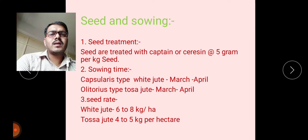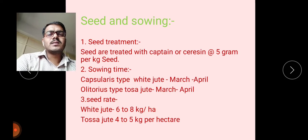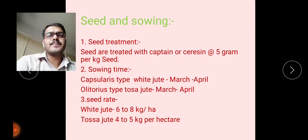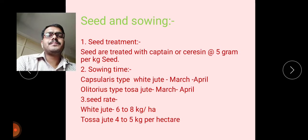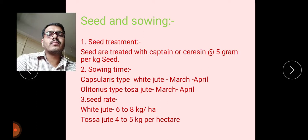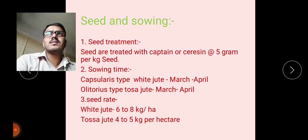Regarding seed and sowing: first, seed treatment — seeds are treated with Captan or Ceresan at the rate of 5 grams per kg of seed to control seed-borne and soil-borne diseases. Sowing time for capsularis type (white jute) is March to April, which is the summer period when highest humidity is present, beneficial for the crop.